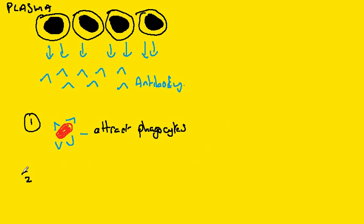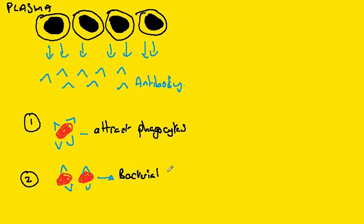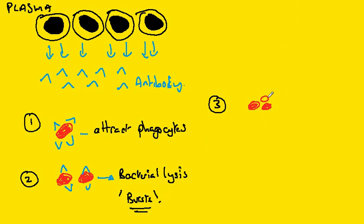The second mechanism is that the antibody attaches and causes bacterial lysis, which means the cell bursts. The third mode of action involves many bacterial cells, where the role of the antibody is to cause them to stick together — this is called agglutination.